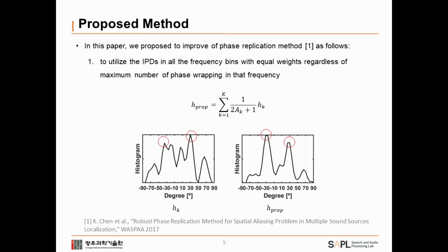in this paper, we proposed two improvements of phase replication method. The first is each frequency bin contributes equally by using probabilistic voting method to the DOA histogram. So, these figures show probabilistic voting method could make true peaks more clearly.